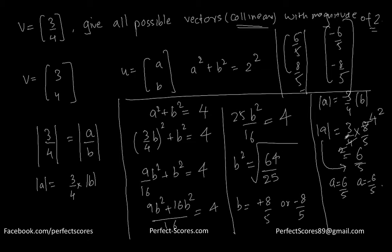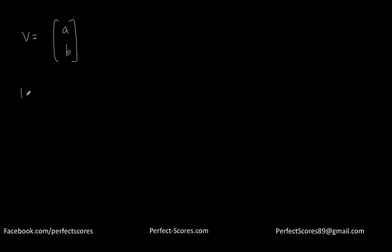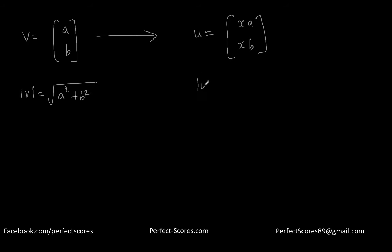Now how did I pair them up? Because vector v has both components positive, the collinear vector will either have both positive or both negative components. Now let me make life more simple. If vector v has components (a, b) and vector u is collinear with components (xa, xb), then magnitude of u = x times magnitude of v, which gives us magnitude of u divided by magnitude of v equals x.